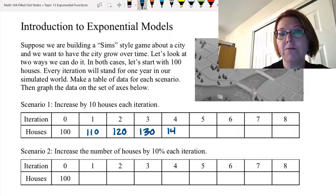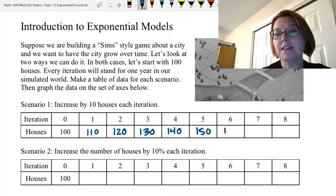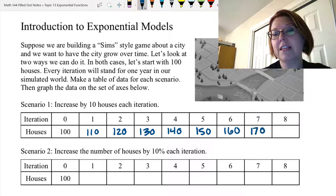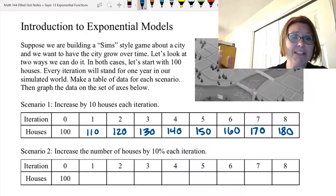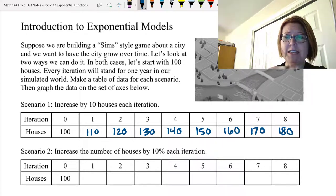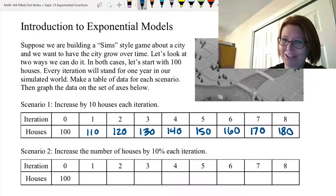The fourth iteration, 140. The fifth, 150. The sixth, 160. The seventh, 170. And the eighth, 180. In fact all we're really doing here is adding 10 every time we do an iteration. So we have very steady linear growth.